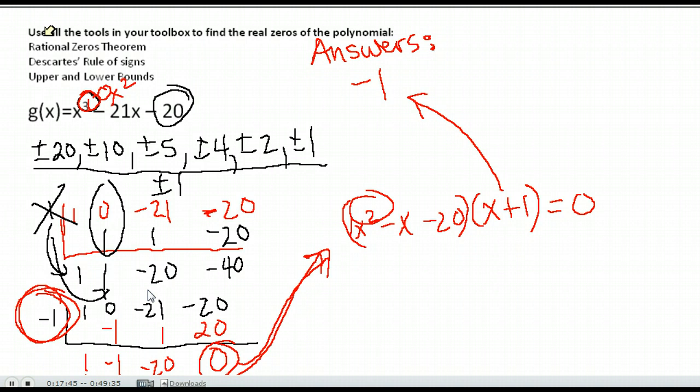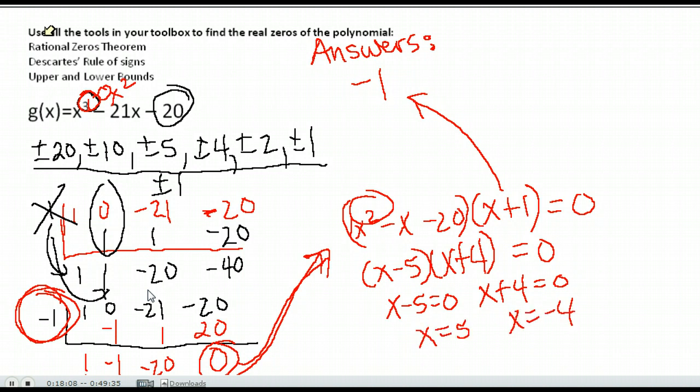Now that it's a squared, we absolutely can. We can either factor it if it factors or use the quadratic formula if it doesn't. This one happens to factor as x minus 5 times x plus 4. And then we set each of those factors equal to 0 and solve them, and we have our final two zeros. So we get x is 5 and x is negative 4. So our answers are negative 1, 5, and negative 4.